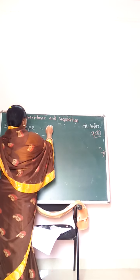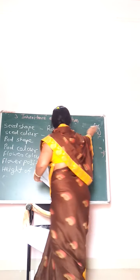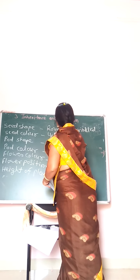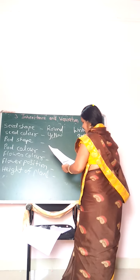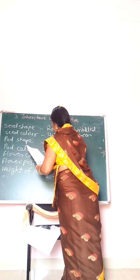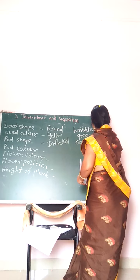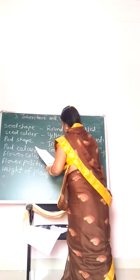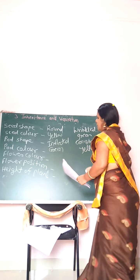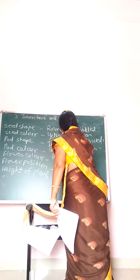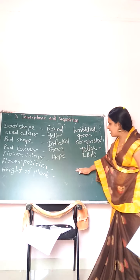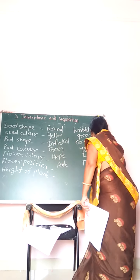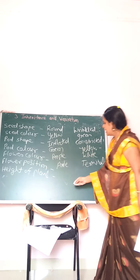For seed shape: round and wrinkled. For seed color: yellow and green. For pod shape: inflated and constricted. For pod color: green and yellow. For flower color: purple and white. For flower position: axial and terminal. For height of plant: tall and dwarf.